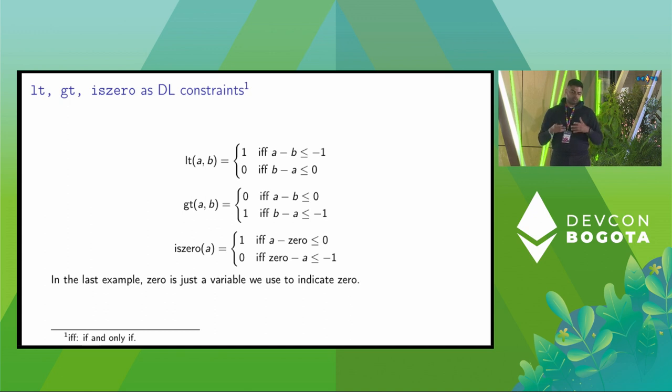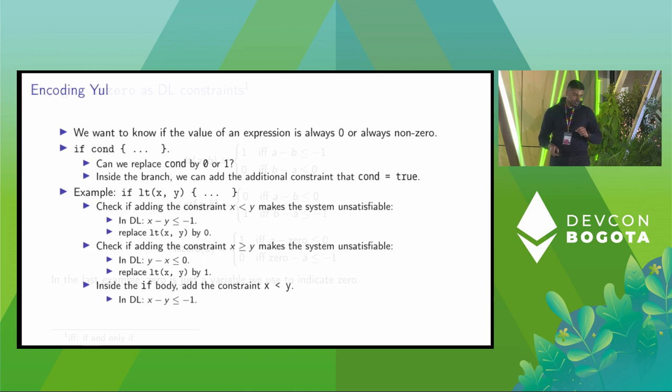We talked about difference logic. But what does it have to do with all these EVM opcodes? It turns out that we can represent these three EVM opcodes using expressions that would match difference logic. In case of less than of AB, when the value is one, it's only when A minus B is less than or equal to minus one. And zero when B minus A is less than or equal to zero. Similarly, you can build these constraints for greater than and is zero. In the last example, zero is just a variable that we used to indicate as zero.